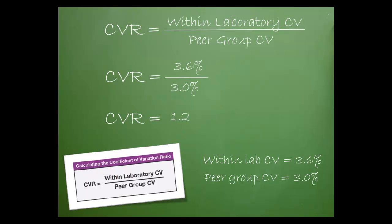The CVR is 1.2. Here's how I got that figure. First, I substituted the CVs into the formula. I then divided the within lab CV by the peer group CV.